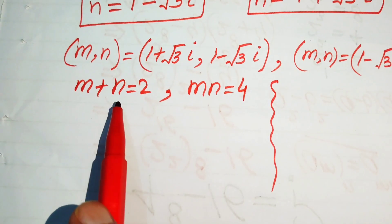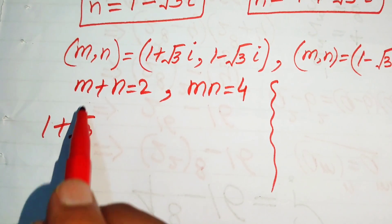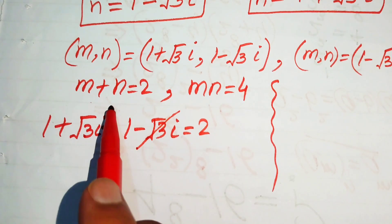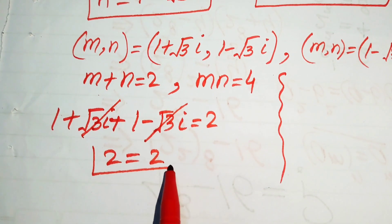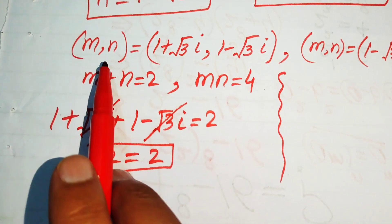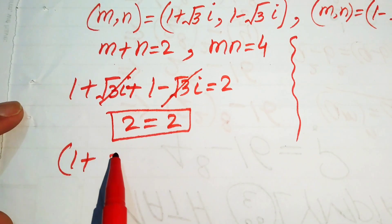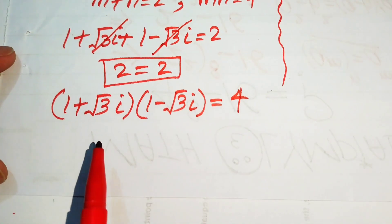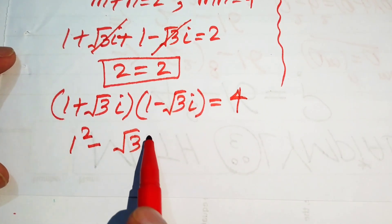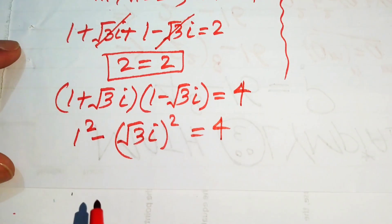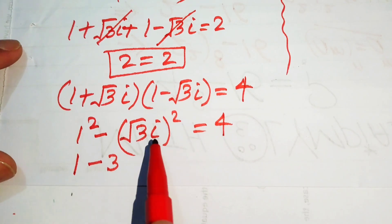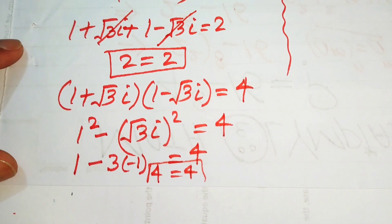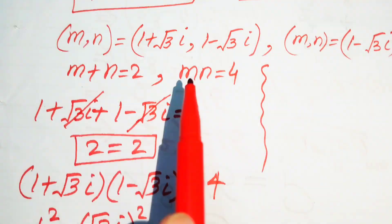For the first solution, checking equation 1: (1 plus root 3 iota) plus (1 minus root 3 iota) equals 2. The iota terms cancel and 1 plus 1 equals 2, confirmed. Checking equation 2: (1 plus root 3 iota) times (1 minus root 3 iota) equals 1 squared minus (root 3 iota) squared equals 1 minus 3 times minus 1 equals 1 plus 3 equals 4. Confirmed.